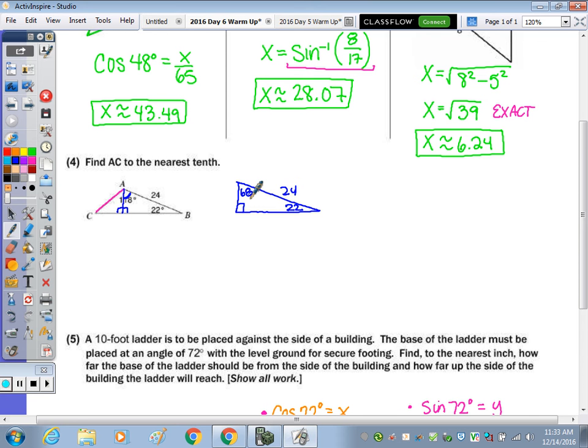this angle right here, 90 minus 22, is going to give us 68 degrees. And I need to use this altitude, x. Once I find this altitude, then I can look over in this triangle to find AC.